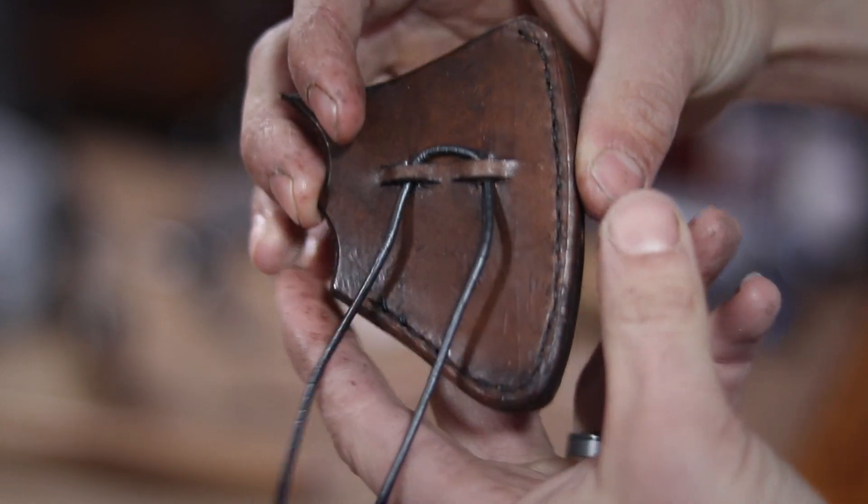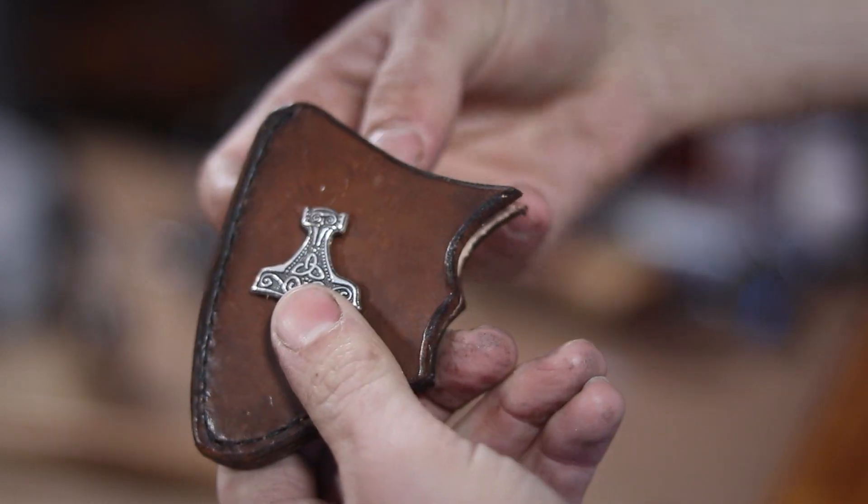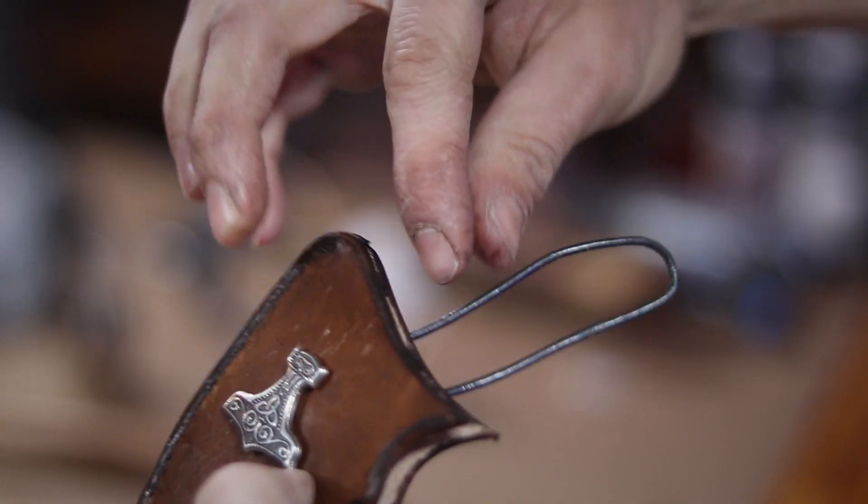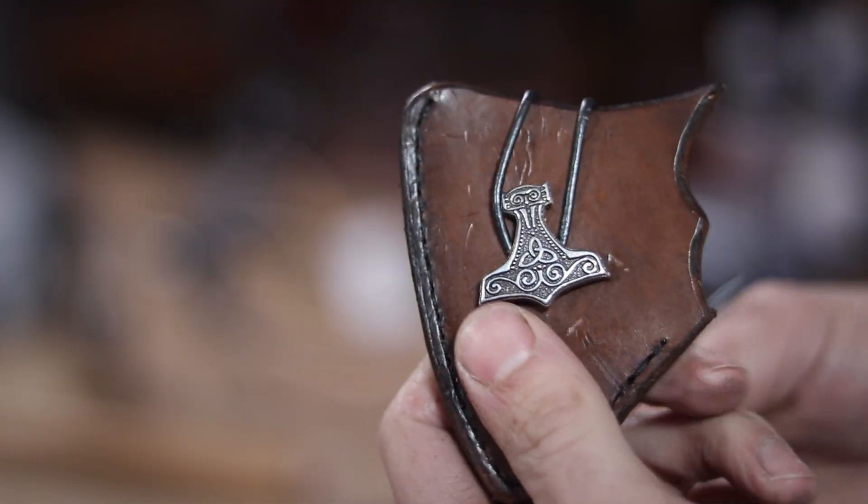These holes are going to help keep this cord into position and make sure that it never gets lost. I take the bite of that cord and loop it around to the front, hooking it onto the concho.